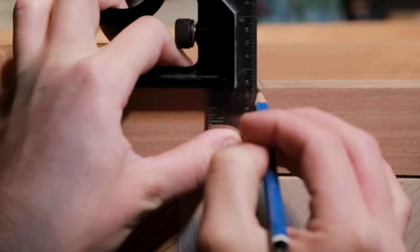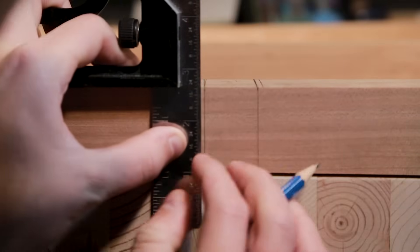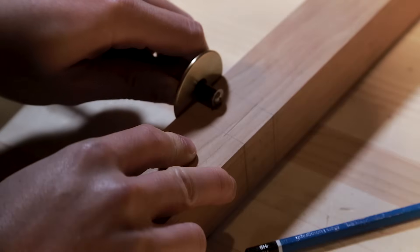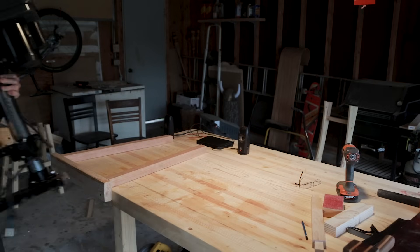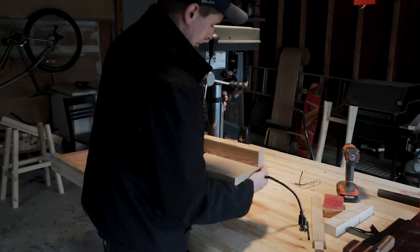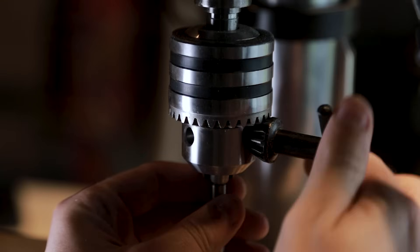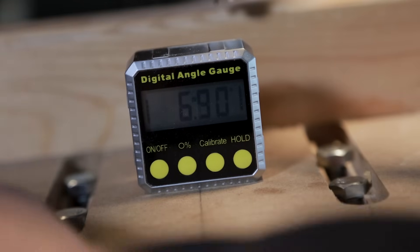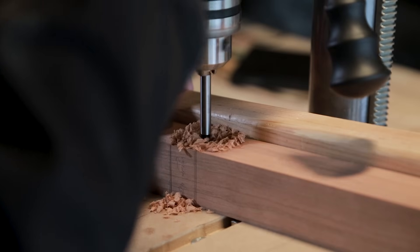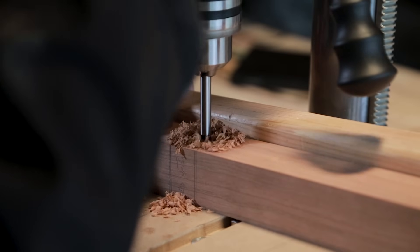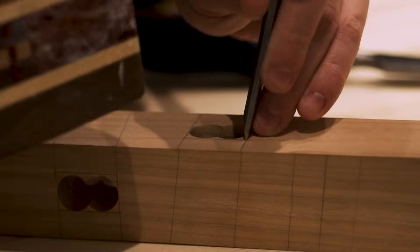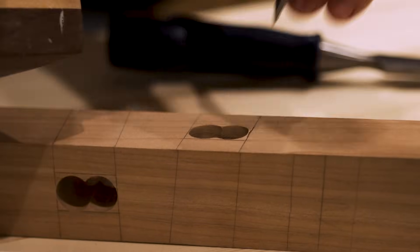Now it's time to start cutting the mortises. To hog out most of the material I used a drill press and a forstner bit. I angled my table to the same seven degrees to compensate for the leg angle. To finish up the rest of the mortise I knocked out the rest with a chisel and mallet.